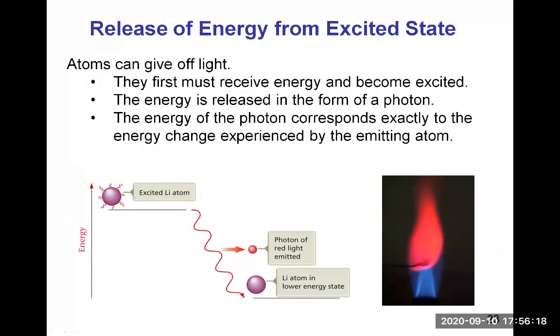Atoms can give off light and that's how they will release the energy that they acquired or absorbed earlier. First, they must receive energy from the outside and become excited. The energy is then released in the form of a photon. The energy of the photon corresponds exactly to the energy change experienced by the emitting atom.